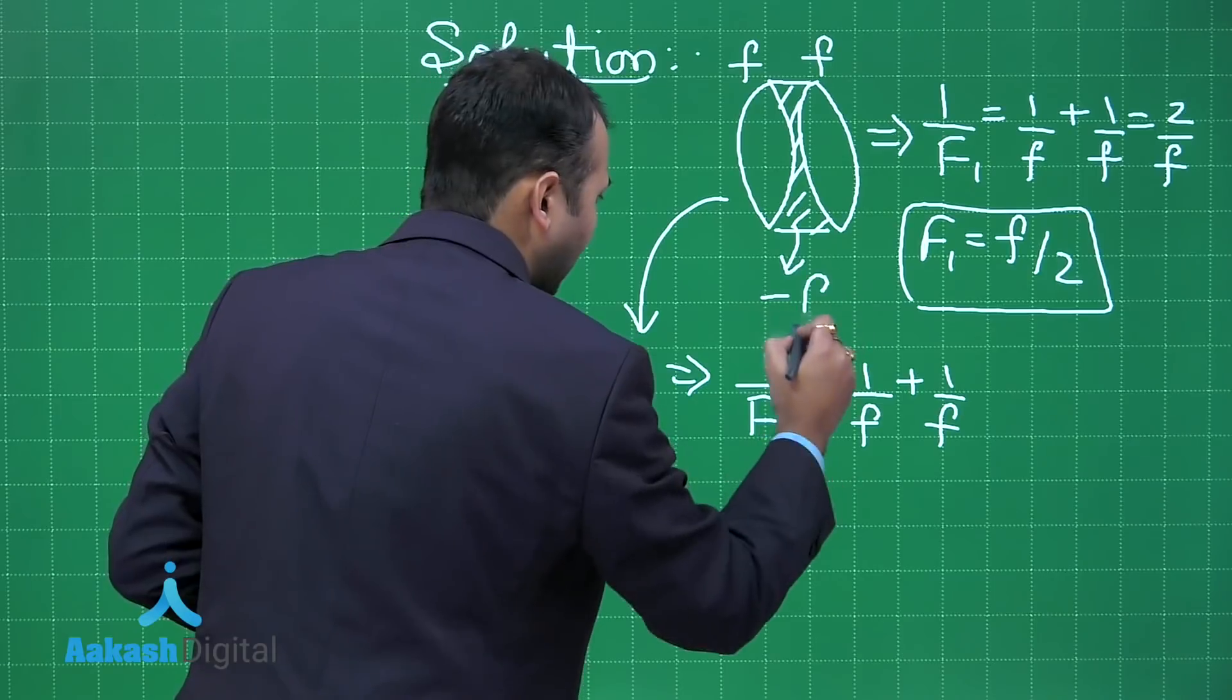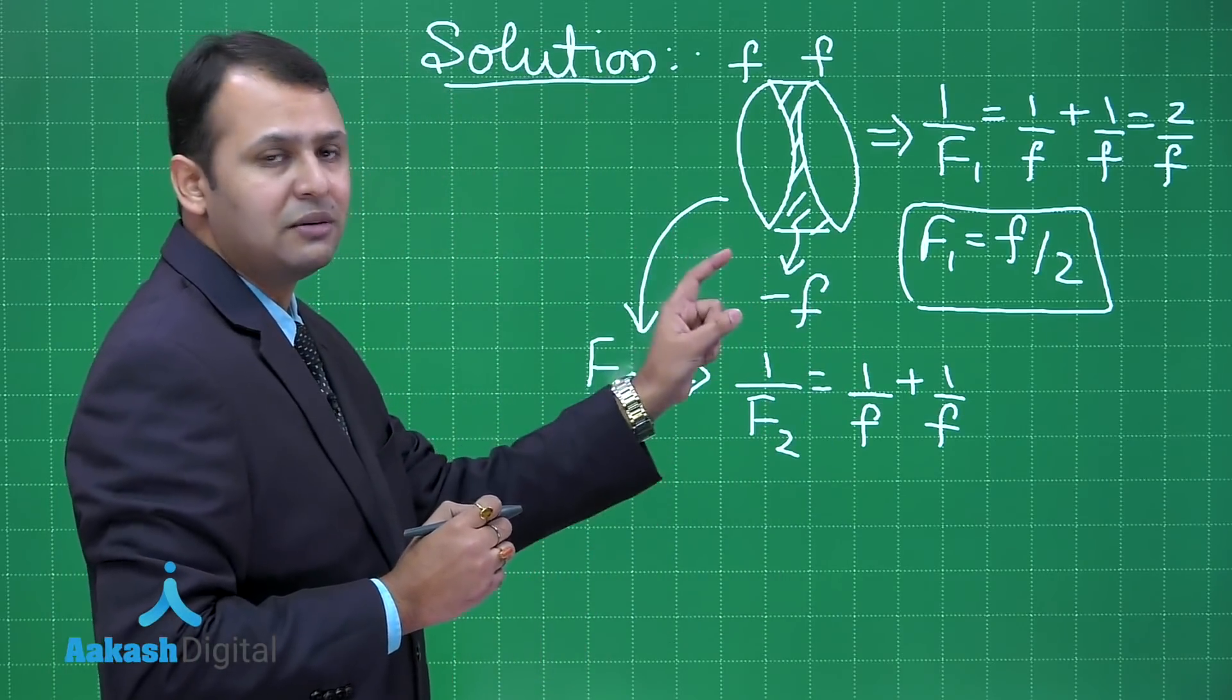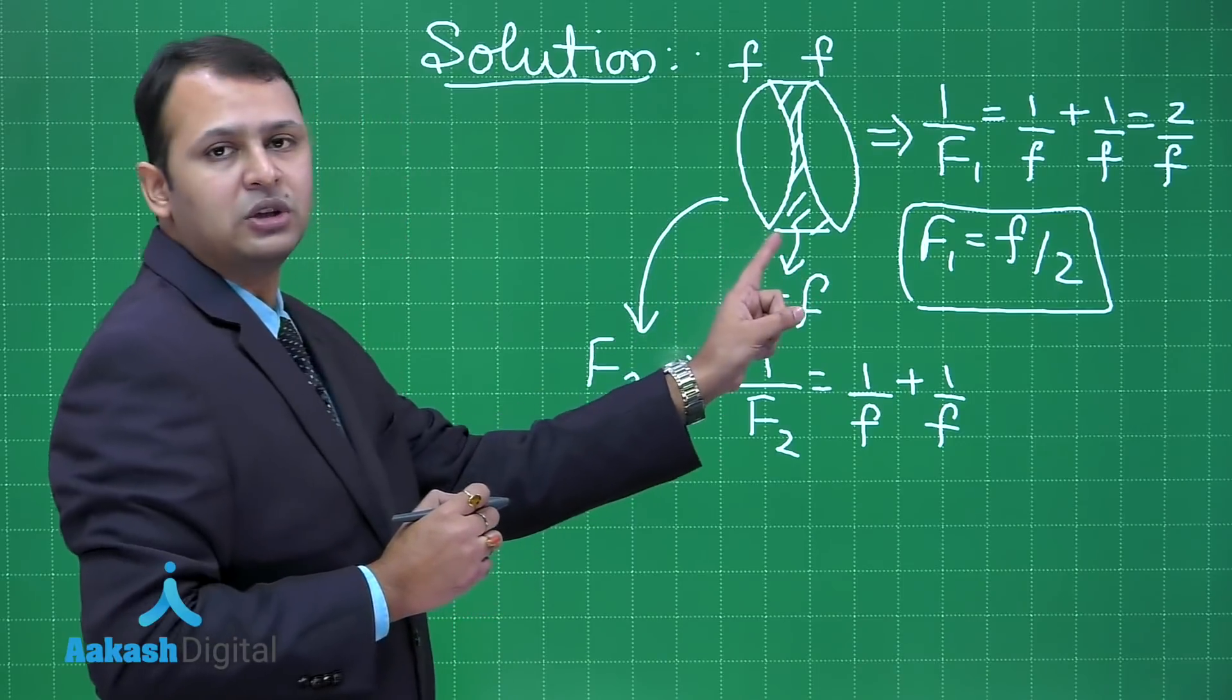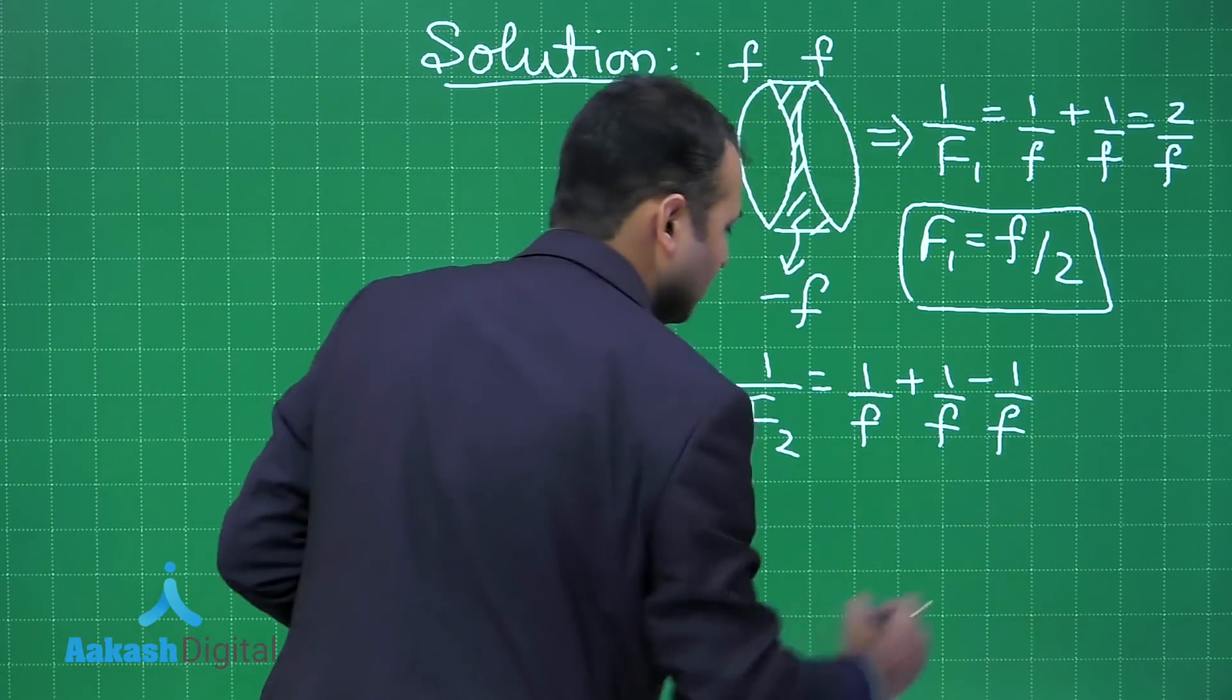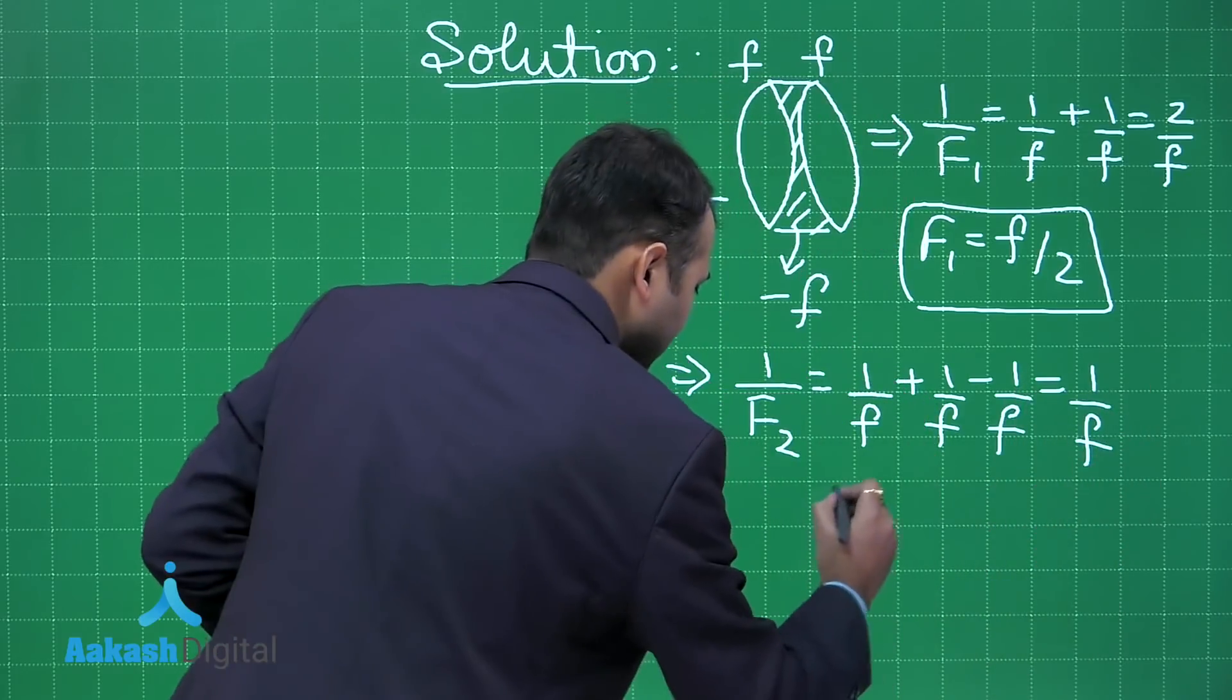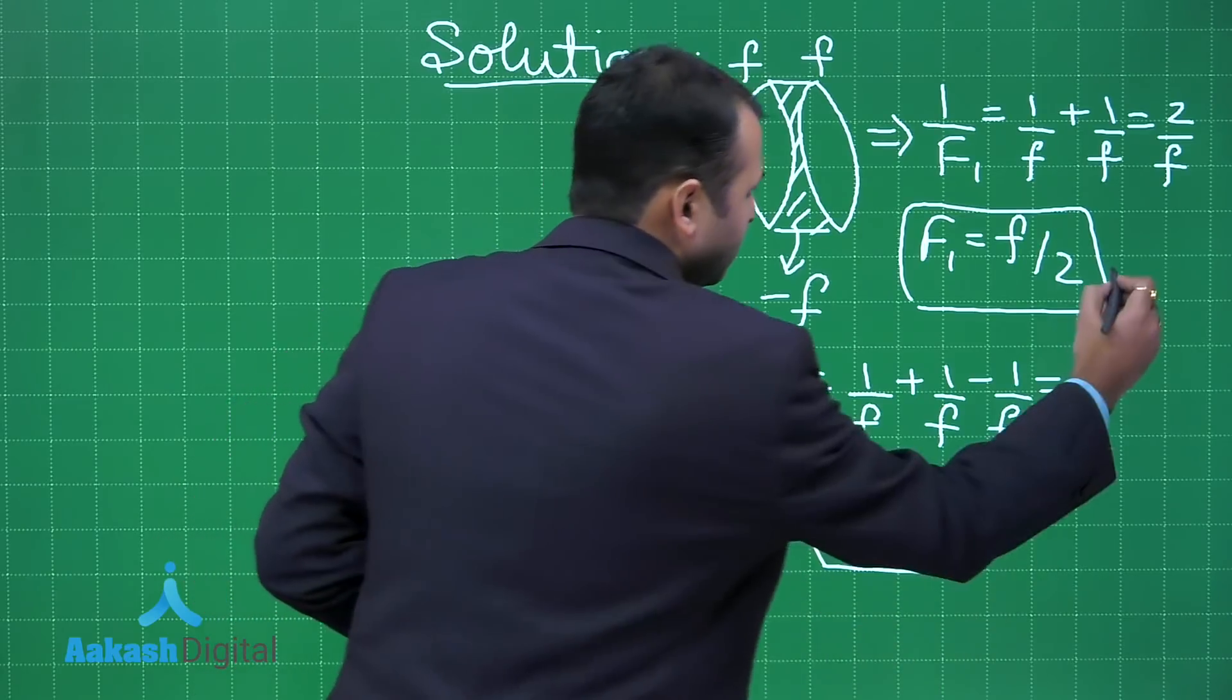This part will have the focal length of minus f, as the radius of curvature is same and refractive index is same, only the curvature is in opposite direction. So this will be minus f. So I will be writing it as like this. I am left with f, that means F₂ equals f. This is the second observation.